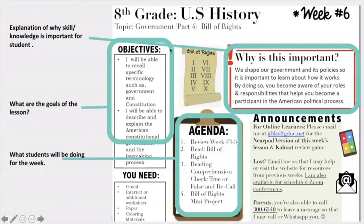Here's an example of a really well prepared lesson. This lesson is on U.S. history and the topic is the Bill of Rights. Right here you have an explanation of why the skill or knowledge is important for the student. Your objectives clearly show the goals of the lesson. Here's an agenda for the week, and on this side you also have announcements which helps when parents want to contact the teacher through email or a contact phone number in case they want to make a phone call.